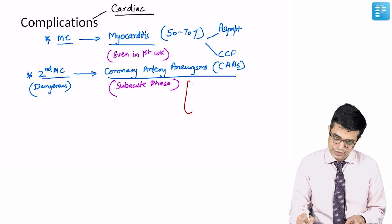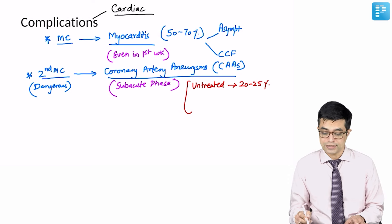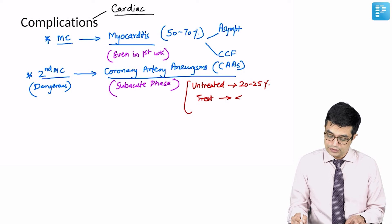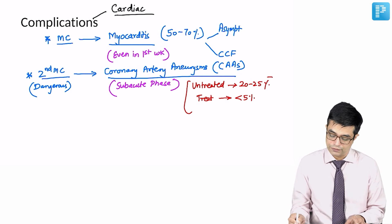Books say that in untreated Kawasaki disease, they tend to develop in 20 to 25 percent patients. This is what is mentioned in Nelson. But if you treat Kawasaki disease with IVIG, they are seen in less than 5 percent of the children.